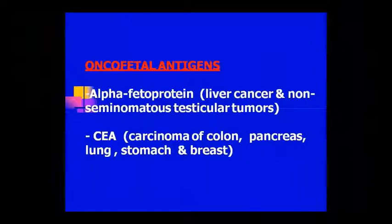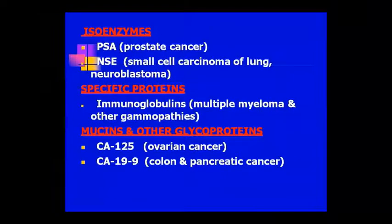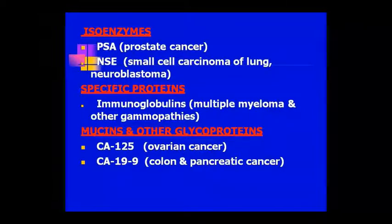Oncofetal antigens like alpha-fetoprotein and CEA — alpha-fetoprotein is for liver cancer and non-seminomatous testicular tumors. CEA is for colon, pancreas, lung, stomach, and breast cancer. Isoenzymes: PSA for prostate cancer, NSE for small cell lung carcinoma and neuroblastoma. Specific proteins: immunoglobulins in multiple myeloma and other gammopathies. And other glycoproteins: CA-125 for ovarian cancer, and CA-19-9 for colon and pancreatic cancer.